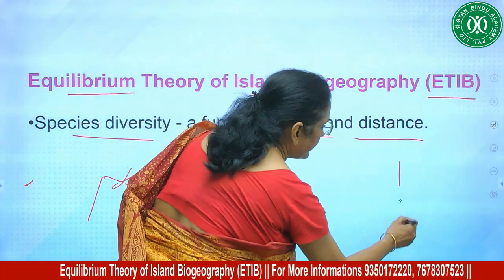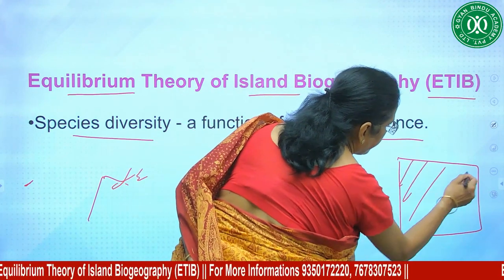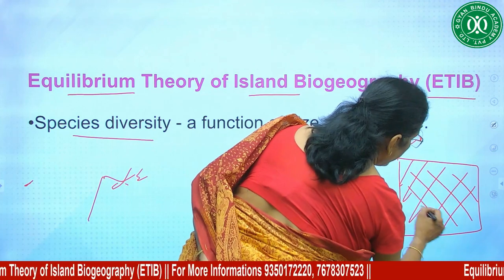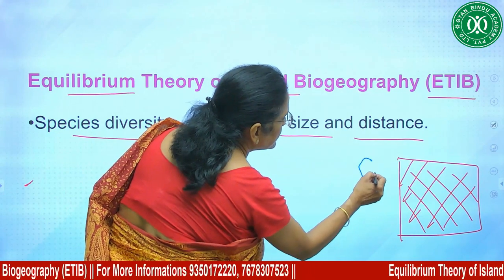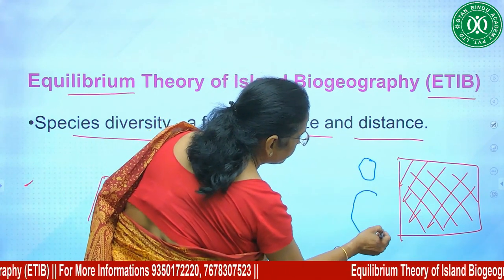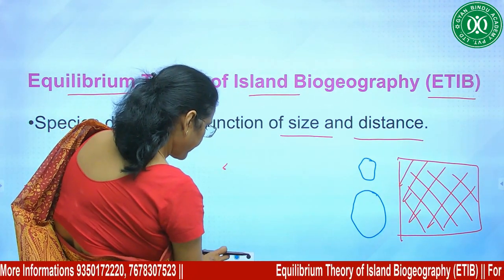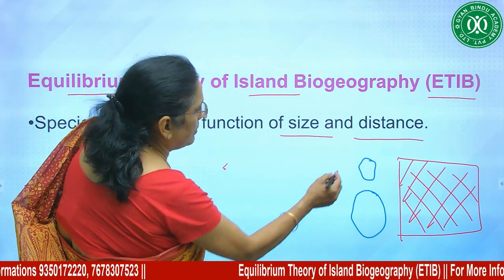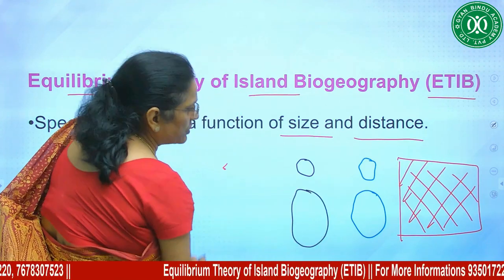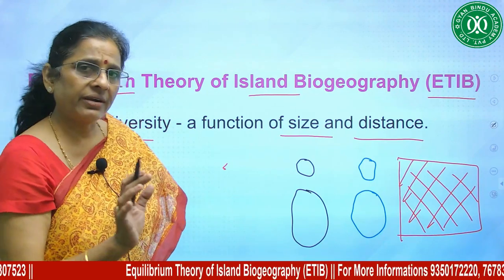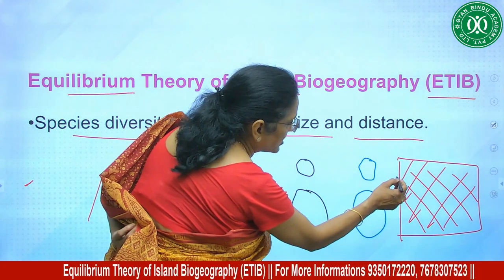Suppose this is a mainland from where species will migrate, and this is an island — this is a small island, this is a big island. Similarly, there are two more islands: one bigger and one smaller, farther away. Together we will talk about the effect of distance, that is, isolation.